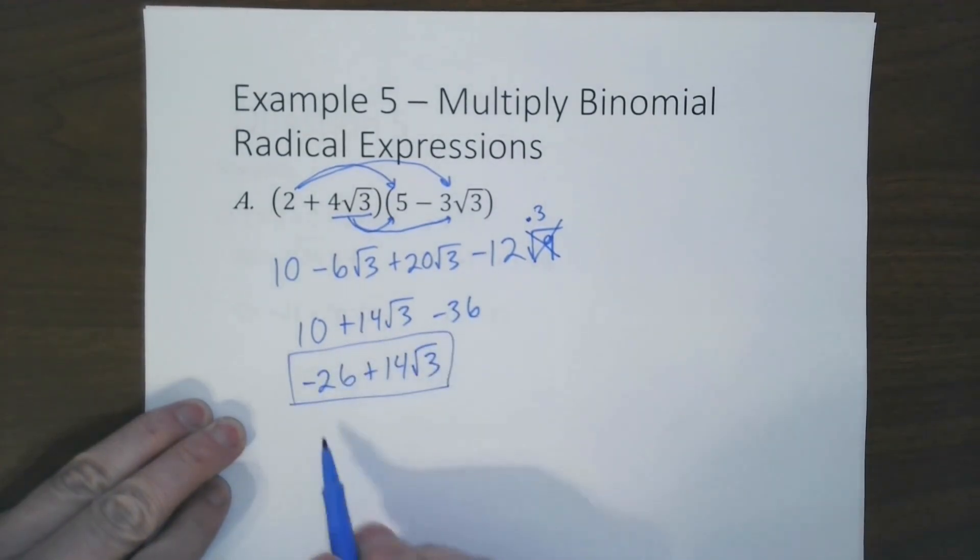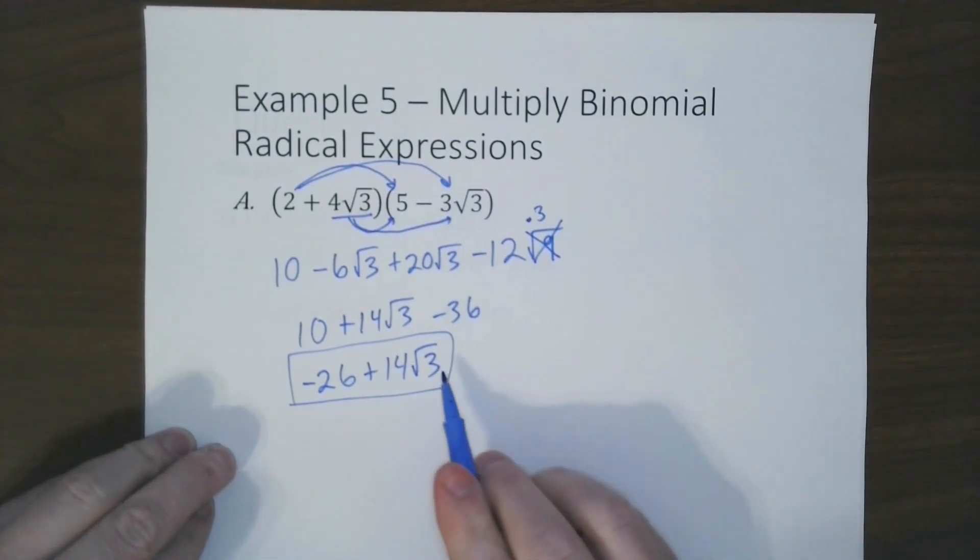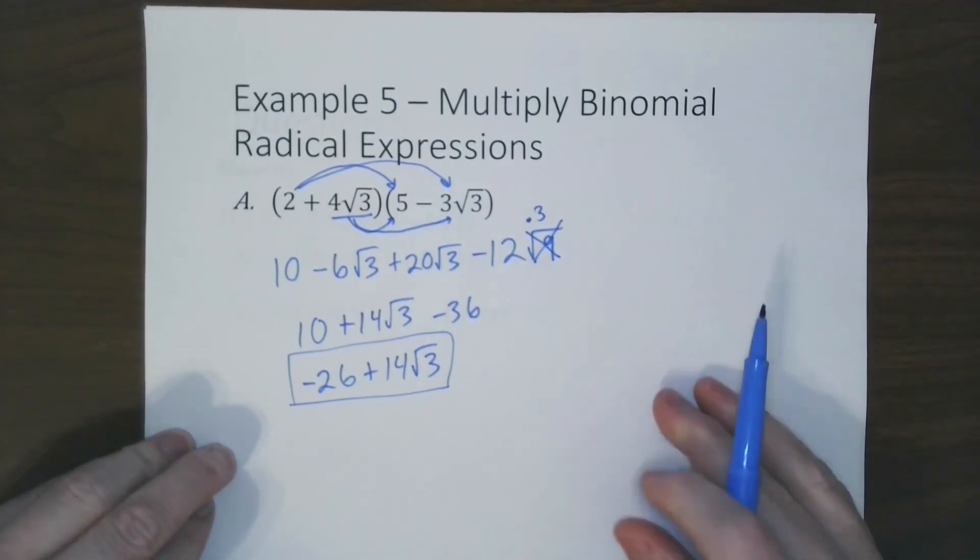If you notice, I wrote the number first, then the radical. That is proper form for writing any radical expression. The radical always goes last. So keep that in mind when you're looking for answers and solving and writing your final answer.